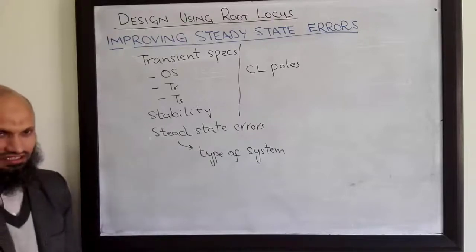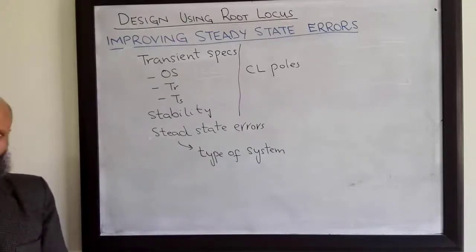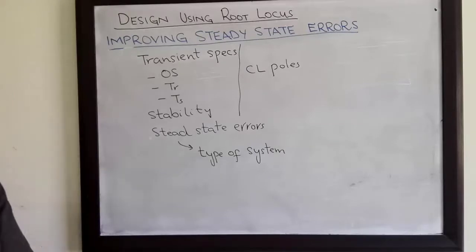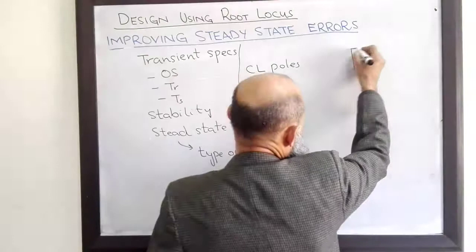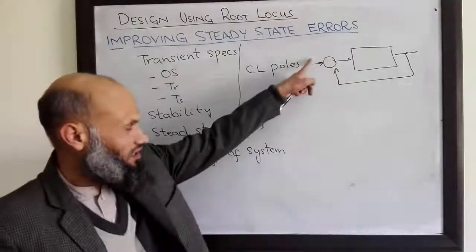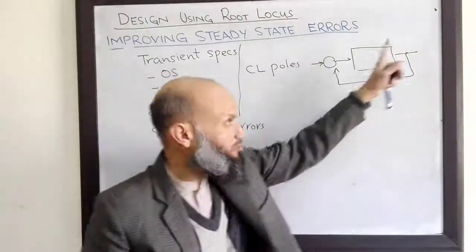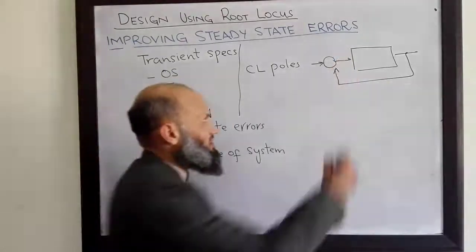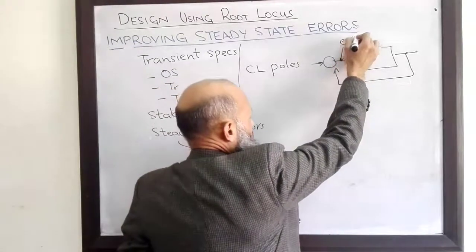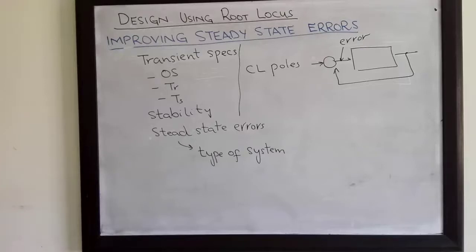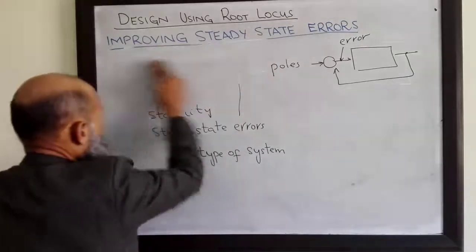What do we mean by zero steady state error? Zero steady state error means whatever is our desired output, the same should be the actual output. In our block diagram, the reference input is also the desired output, and the difference between the desired output and actual output is called error. Ideally this error should be equal to zero.